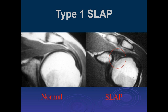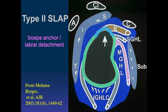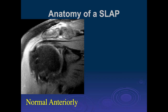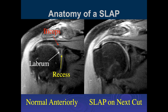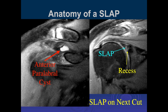For young athletes, it's probably better to use the SLAP terminology — but that's up to you and the people you work with. A Type 2 SLAP tear, Snyder's second group, involves the superior labrum with a complete detachment that includes the biceps anchor. Here we can see the superior labrum, the biceps anchor, normal articular cartilage, and a normal recess.